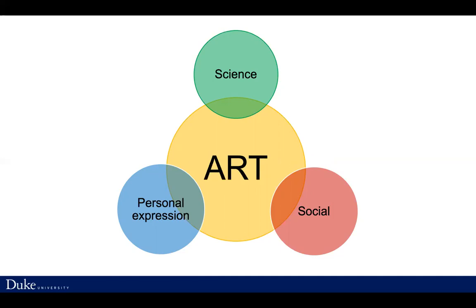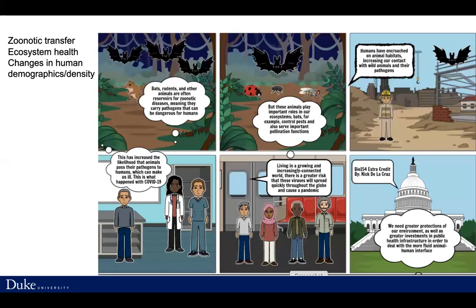This was a way for students in isolation to have something constructive to do that felt like they were moving forward in the class beyond just watching Zoom videos. Here is a scientific product that a student created: a very sophisticated graphic illustration that explains zoonotic transfer, ecosystem health, the importance of that to emerging diseases, changes in human demographics and density, connected to an Institute of Medicine report we had read earlier in the class. Students had the choice of looking back, thinking through everything we had done so far, and what resonated with them.